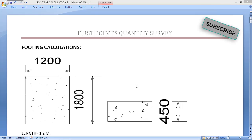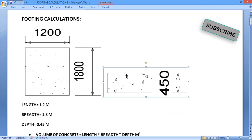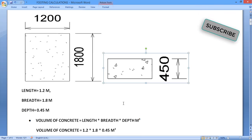For the footing, we'll calculate the volume of concrete, shuttering area, and bitumen paint area. As you see on the screen here, we have a footing example. Length here is 1200 mm, breadth is 1800 mm, and depth is 450 mm.